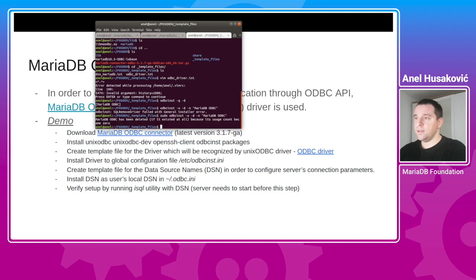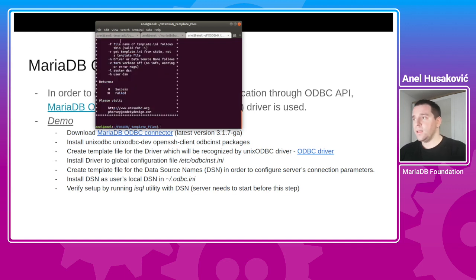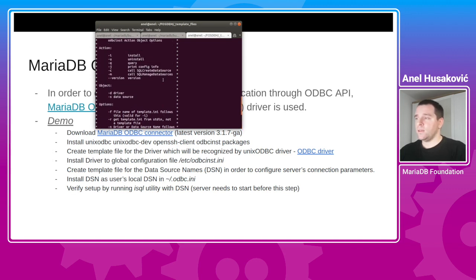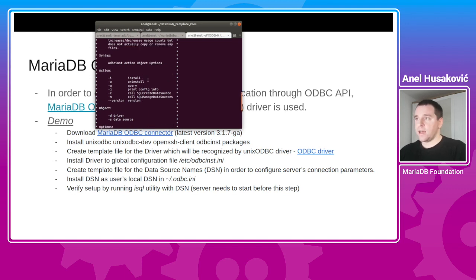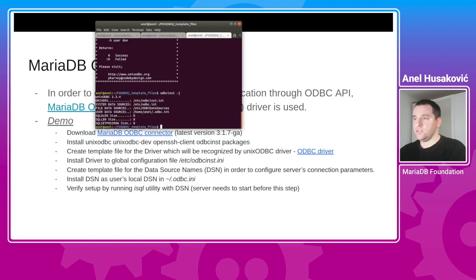odbcinst uses these files to create configuration files that can be found using the -j option. If we run the -j option, we will find everything we need to know about the unixodbc configuration paths. Drivers go in /etc, and the system data sources go in the same directory, while user data sources go in the user home — we will use user data sources in this talk.